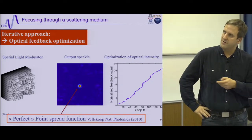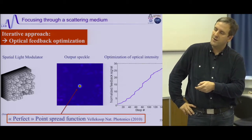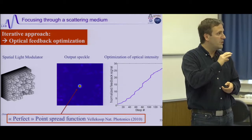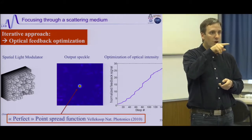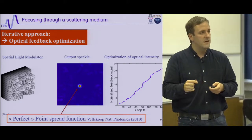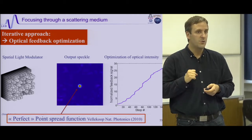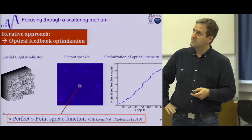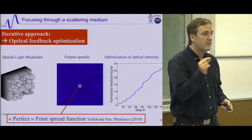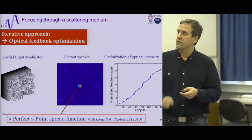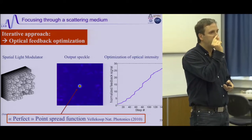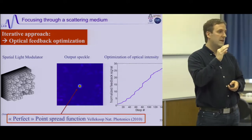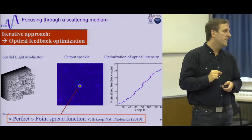The interesting point is that looking at this optimized spot, it is very small and well-defined with no aberrations. The focus has exactly the correlation function of the speckle, which is perfect. So you obtain a perfect, diffraction-limited, high signal-to-noise ratio spot through the medium.